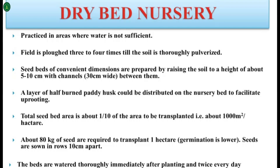Raised seed beds of convenient dimensions are prepared with a height of 5 to 10 cm, and channels are kept between the raised beds so that the drainage system can work efficiently. A layer of half-burned paddy husk can be distributed on the nursery bed to facilitate uprooting.